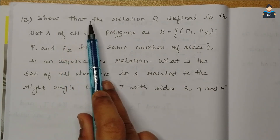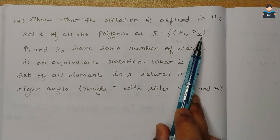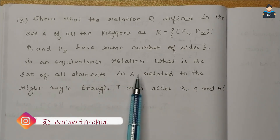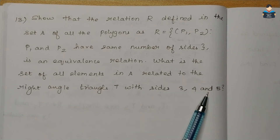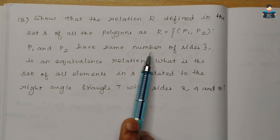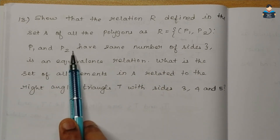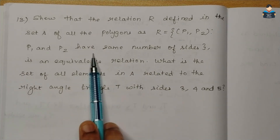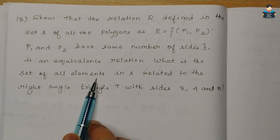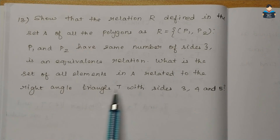Question 13: Show that the relation R defined in the set A of all polygons as R = {(P1, P2) : P1 and P2 have the same number of sides} is an equivalence relation. Also, what is the set of all elements in A related to the right angle triangle T with sides 3, 4, and 5?